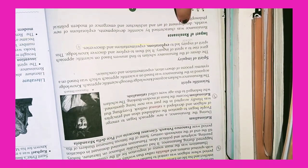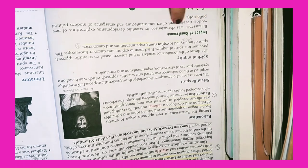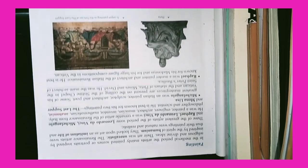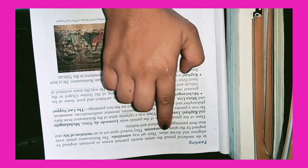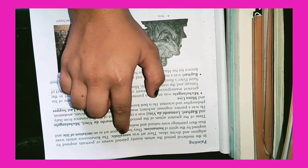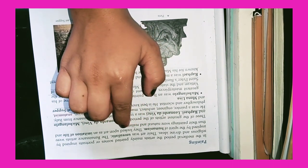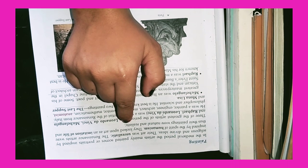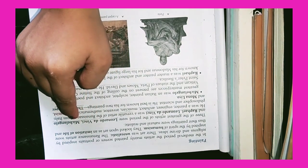Impact of Renaissance: Renaissance was characterized by scientific developments, explorations of new worlds, developments of art, architecture, and emergence of modern political philosophy. Painting: In the medieval period, artists mainly painted scenes and portraits inspired by religious and divine ideas. Their art was unrealistic. The Renaissance artists were inspired by the spirit of humanism. They looked upon art as an imitation of life and thus their paintings were natural and realistic. Three of the greatest artists of the period were Leonardo da Vinci, Michelangelo, and Raphael.